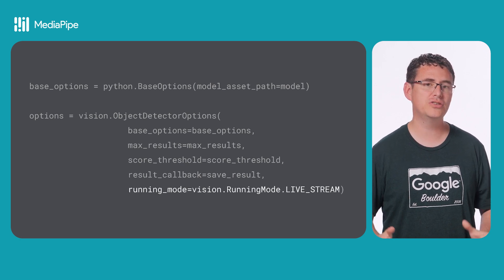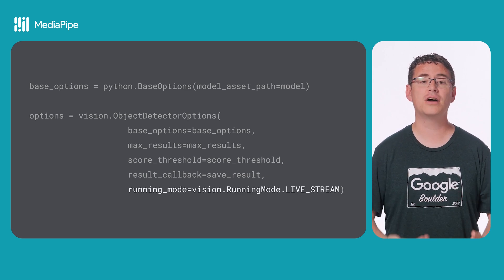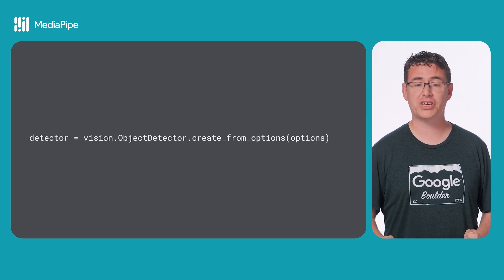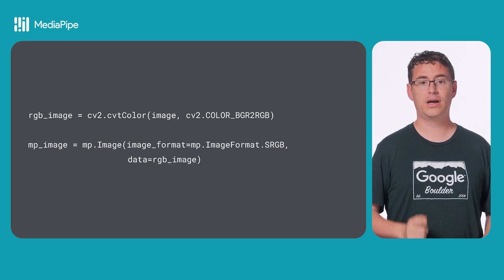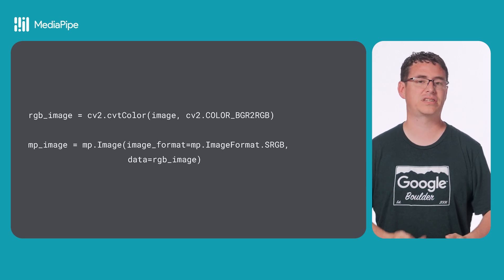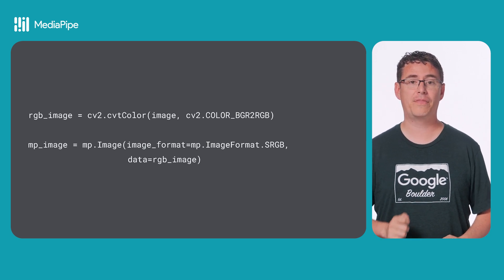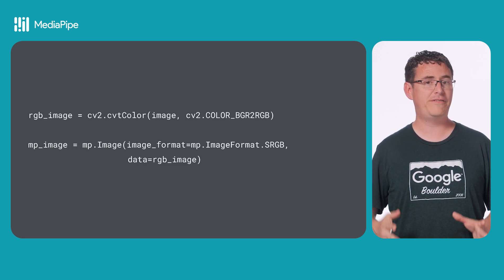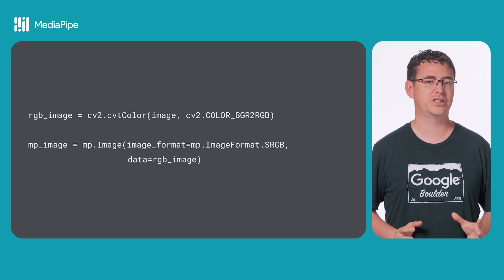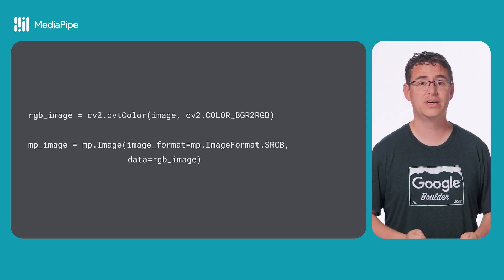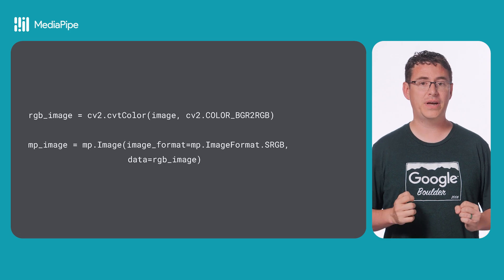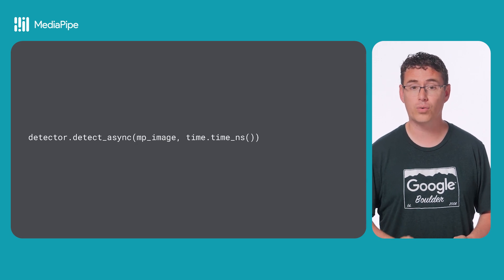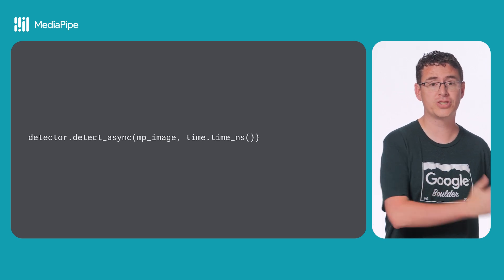In this case, you'll also use the live stream running mode because this is going to use the camera to constantly detect against a video stream. After you have your options objects configured, you can create the detector object that will do the majority of the ML work for you. Next, you'll get an image frame from the camera and do some pre-processing on it, including converting the image to the RGB format that the machine learning model requires, as well as creating a new MediaPipe image object that will be used for inference. With all of that out of the way, you can call the detect_async method on the detector with that MediaPipe image and a timestamp, which will return the detection result to your callback function.